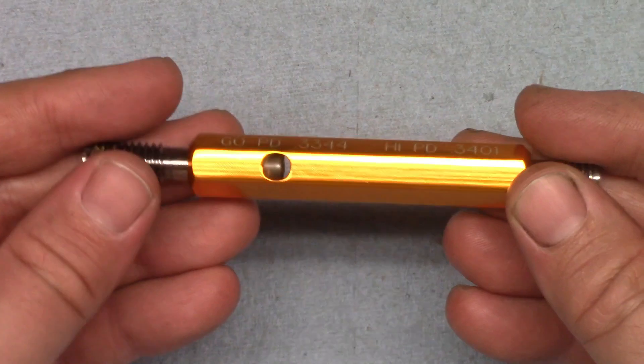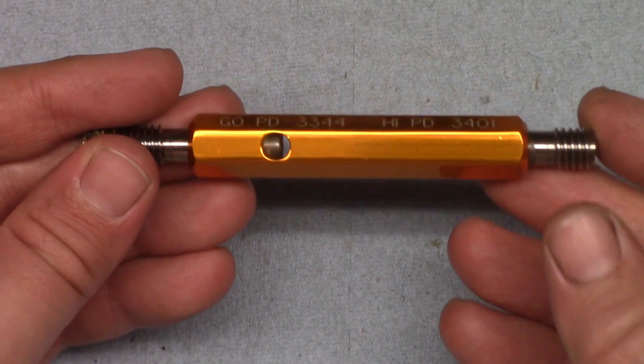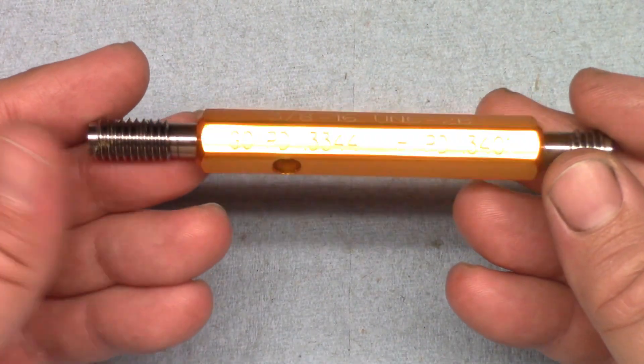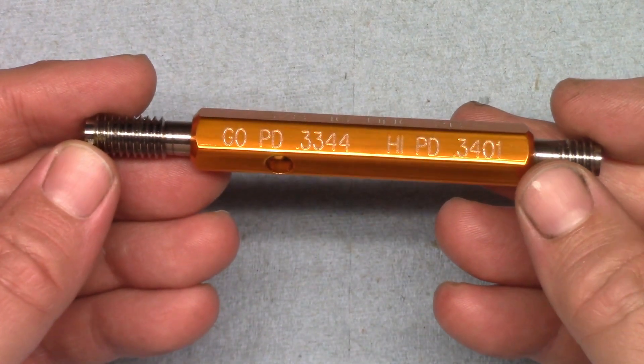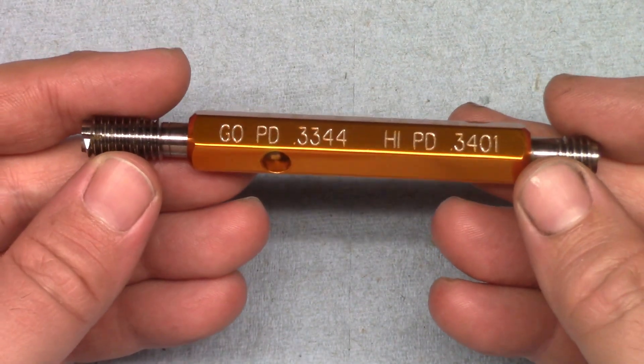Then, just insert replacement gauge members. Like the ring gauges, there are cheaper versions available that do not have replaceable ends, and those would need to be replaced entirely when they wear.